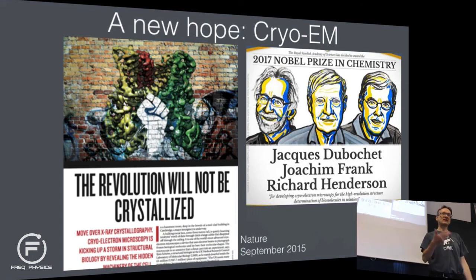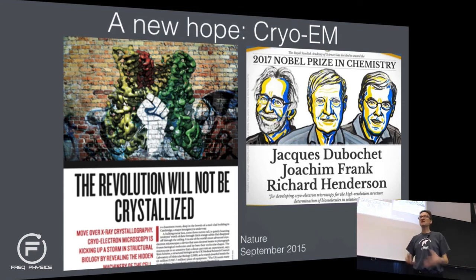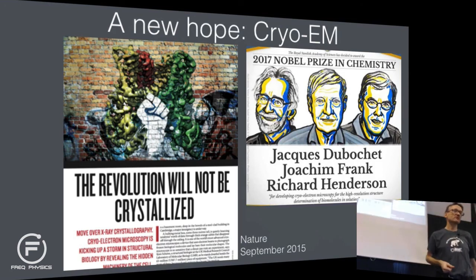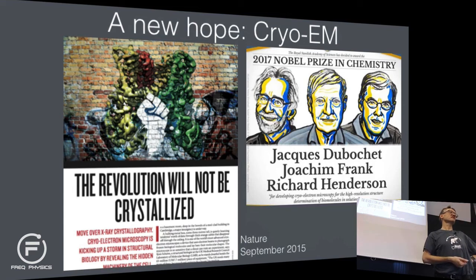Cryo-electron microscopy builds on electron microscopy — replacing light with electrons. If you accelerate electrons to a few hundred thousand electron volts, they will have very short wavelengths and you can image with electrons. In material science you can literally see almost individual atoms. The problem is that you only see that if you throw a lot of energy — tons of electrons — and these proteins are fragile. So if you start throwing lots of electrons on the proteins, they will break.